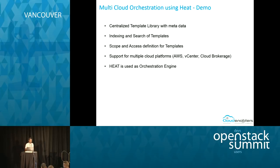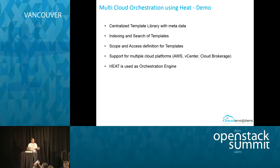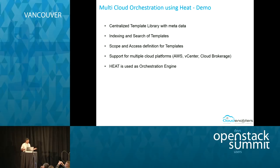What do we require for multi-cloud orchestration using HEAT? We'll see a quick demo covering: the centralized template library, how to enable indexing and search for templates, how to define access control for templates, and how to orchestrate across different clouds using a HEAT engine.